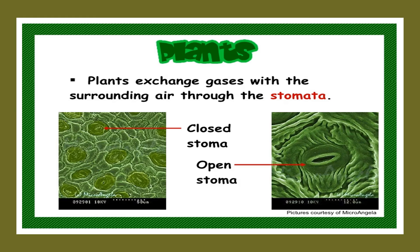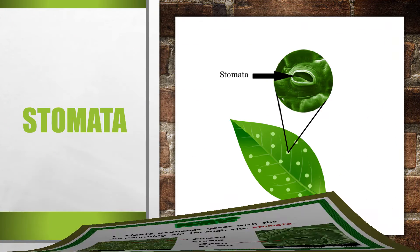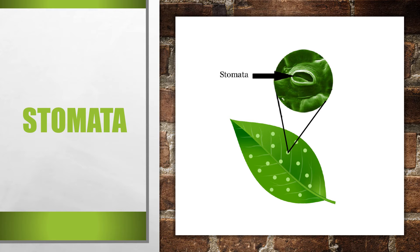Now, how do plants breathe? Using their stomata. Plants exchange gases with the surrounding air through the stomata. In the first picture you can see the closed stomata, but in the second picture you can see open stomata. You can see there on the leaf — the small dots are basically the stomata. You need a microscope to see these stomata.